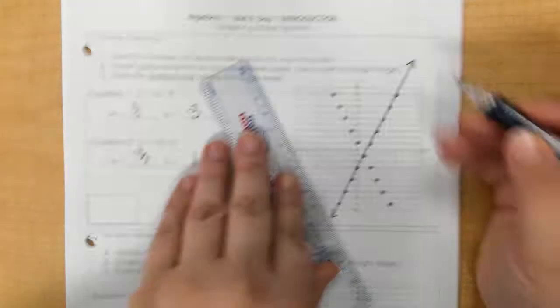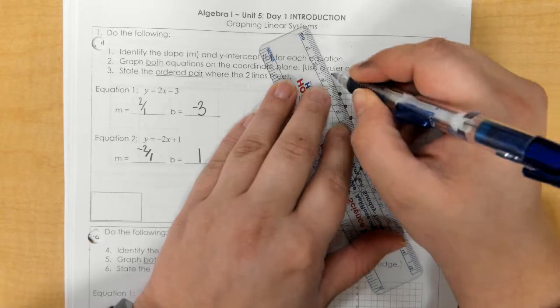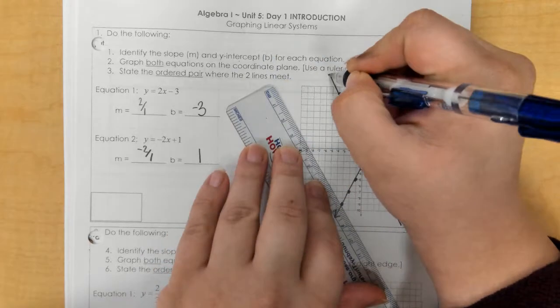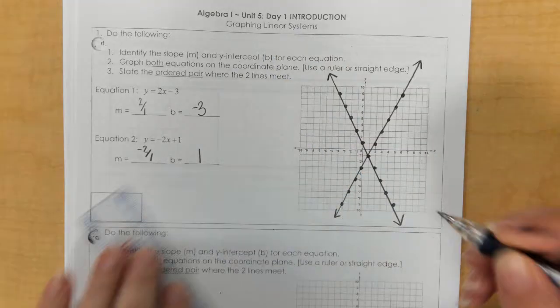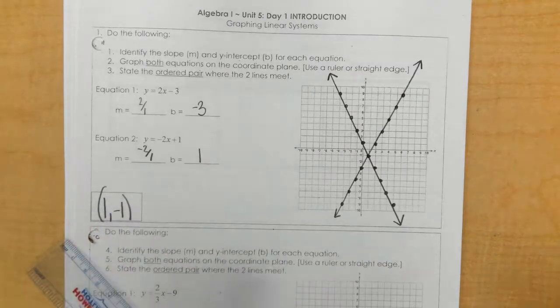And then we could draw our line. And we would get our solution to be 1, negative 1.